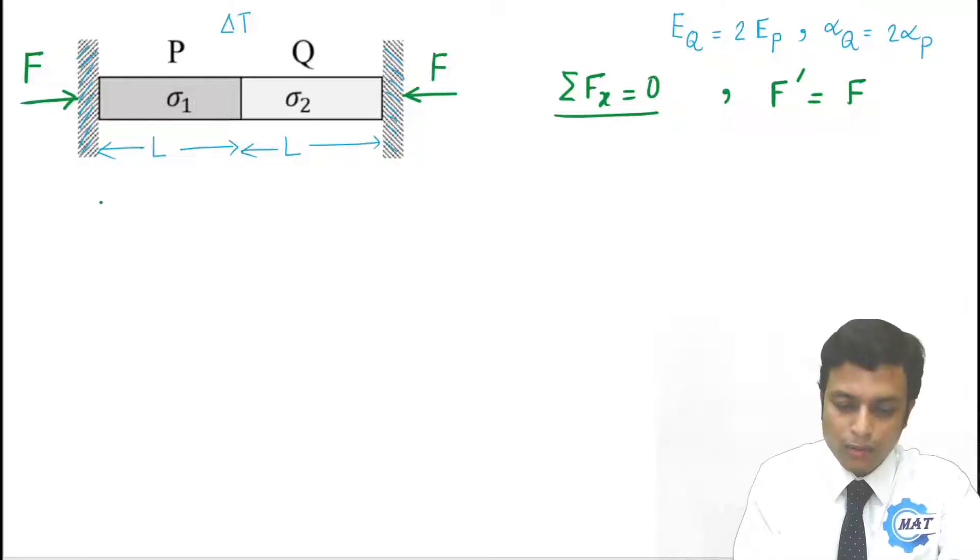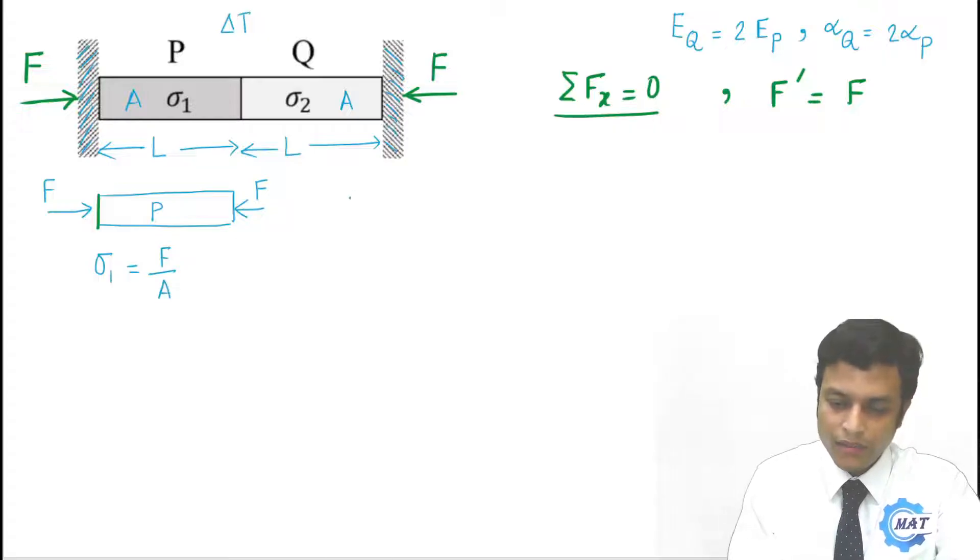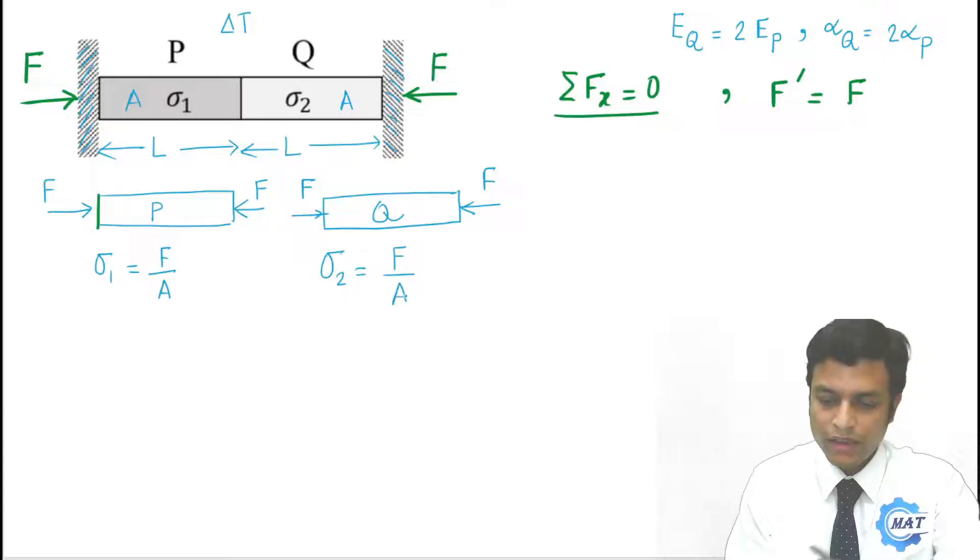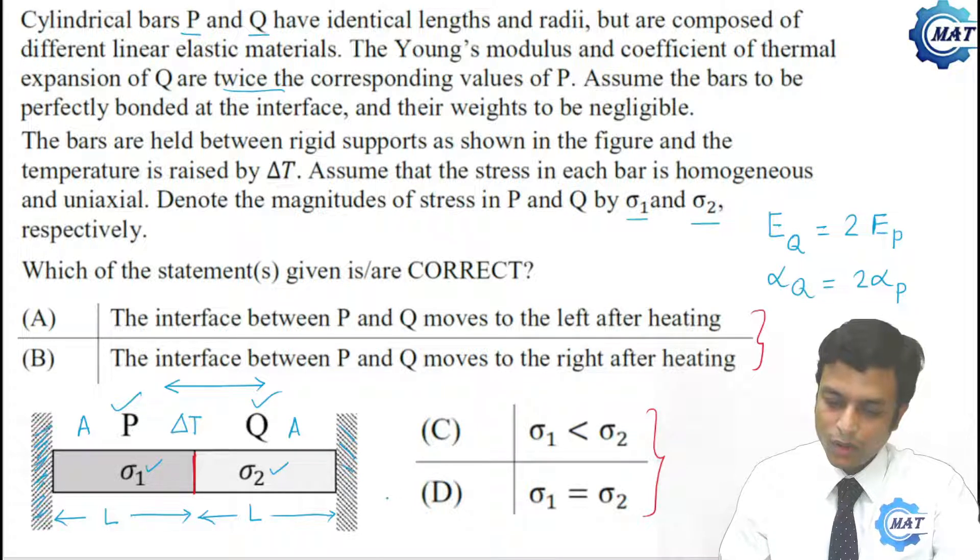Now if force is F, then on P what will be the stress? If we draw the free body diagram of P, then force, if area is A, both having same area, then stress on P, that is sigma1 is F by A. Similarly, if we draw the free body diagram of Q, this is F and this is also F. So sigma2 is also F by A. So we got the first answer: sigma1 must be equal to sigma2. Option D is correct.